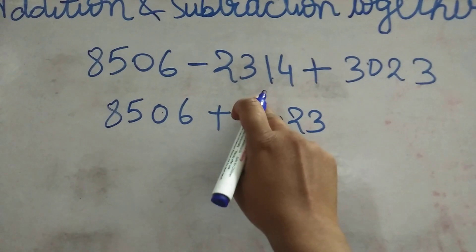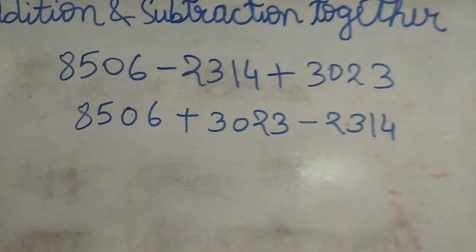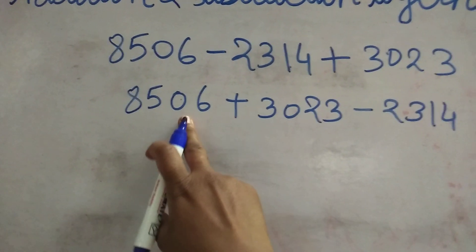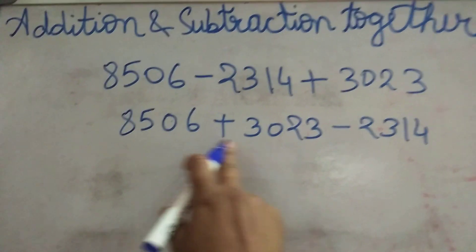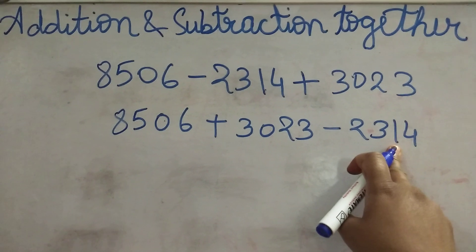Then at last we will write this minus number. Now, always first we will do the addition, then from that result we have to subtract this number.